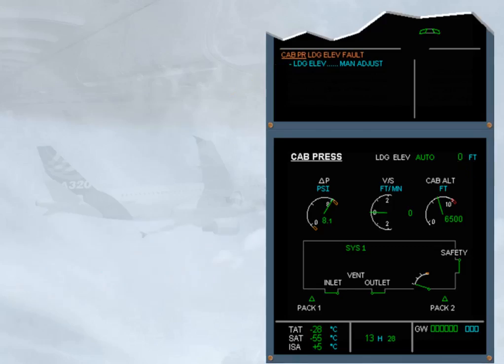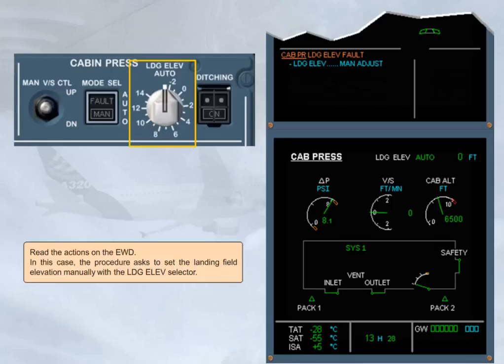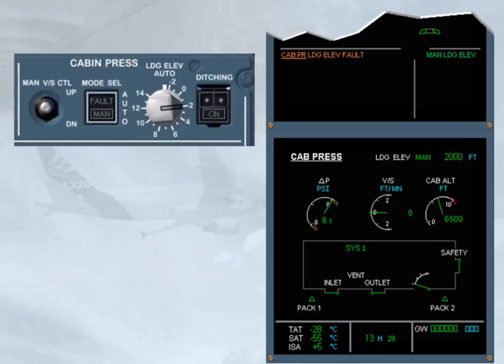Read the actions on the engine warning display. In this case, the procedure asks to set the landing field elevation manually with the landing elevation selector. As soon as the selector is moved from the auto position, the action line on the engine warning display clears, and a manual message appears on the cabin pressure page. The landing elevation value will also indicate the selected value.